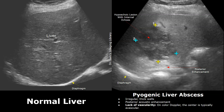Posterior acoustic enhancement always occurs behind fluid-filled structures, so this feature lets us know that it is a fluid-filled structure and not a solid mass. A solid mass will not have posterior acoustic enhancement. When we apply color Doppler, we will not see any internal vascularity inside an abscess — it will not have any blood flow. This lack of vascularity on Doppler is another feature that helps us in distinguishing an abscess from a malignant lesion.